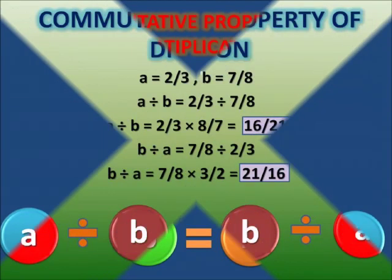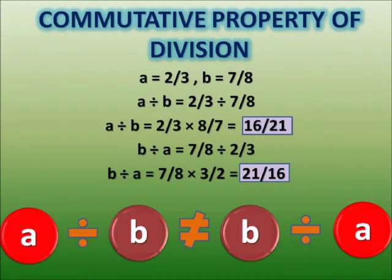Now let us talk about division. Division is again going to be interesting as it is not going to hold good. Consider a equals to 2 by 3 and b equals to 7 by 8. Calculating a divided by b: 2 by 3 divided by 7 by 8 equals 2 by 3 multiplied by 8 by 7, which is 16 by 21. Now calculating b divided by a: 7 by 8 divided by 2 by 3 equals 7 by 8 multiplied by 3 by 2, which is 21 by 16. So a divided by b equals 16 by 21, and b divided by a equals 21 by 16 — two different values because the numerator and denominator got exchanged.